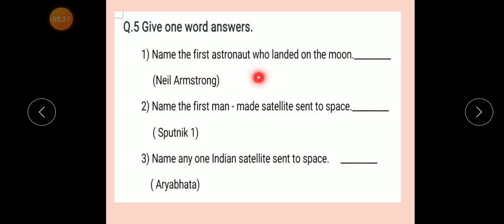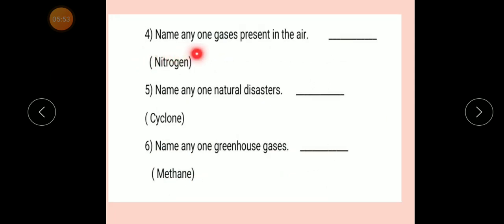Read again: Number one — Neil Armstrong. Number two — Sputnik 1. Number three — Aryabhata. Number four — Nitrogen. Number five — Cyclone. Number six — Methane. Done, complete the revision.